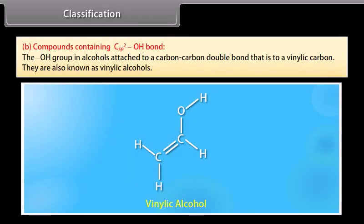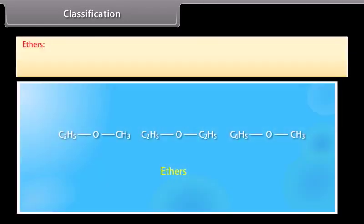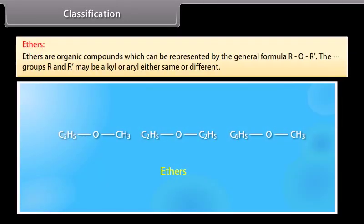Compounds containing sp2 hybridized carbon atom bonded with hydroxyl group: the hydroxyl group in alcohols is attached to a carbon-carbon double bond, that is to a vinylic carbon. They are also known as vinylic alcohols. Ethers are organic compounds represented by the general formula R-O-R'. The groups R and R' may be alkyl or aryl, either same or different.